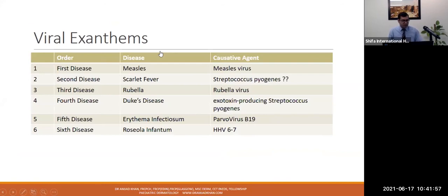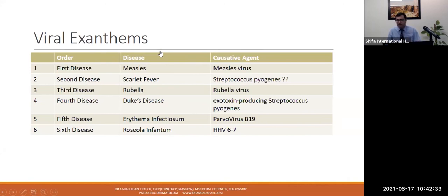Moving quickly to viral exanthems and special cases. Viral exanthems were historically given names in the order they were discovered: first disease, second disease, third, fourth, fifth, and sixth. But then people realised not all were viral — second and third (scarlet fever and Dukes disease) are bacterial infections. As medical knowledge improved, we stopped using discovery order and started using names like measles, scarlet fever, and rubella, and identified their causative agents.